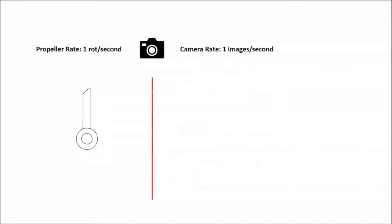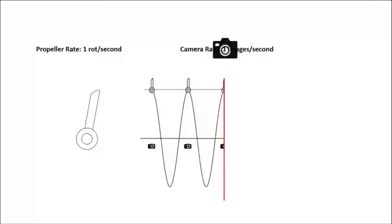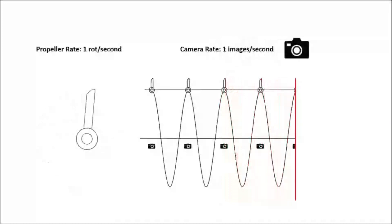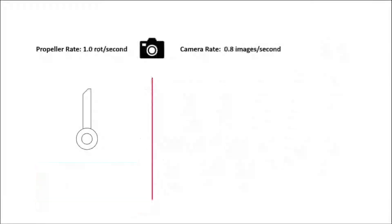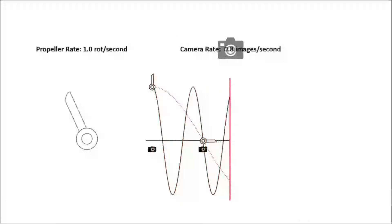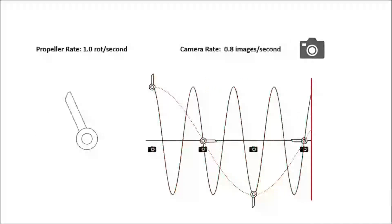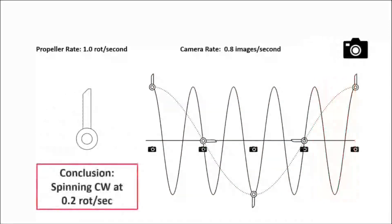There are three interesting cases to consider regarding the rate of the camera. If we took pictures at the same rate the propeller was spinning, the propeller would appear stationary when we flip back through it, reaching the same position at the moment we take the picture each time. If we took them slightly slower, the propeller would get all the way around and then a little bit further before we take the picture. When we flip through, as we can see in the small images here, it would appear to turn clockwise slower than the real rate. Here 0.2 rotations per second.